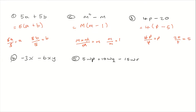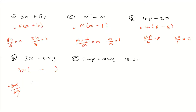Now for example 4, we have negative 3x minus 6xy. When we look at the numbers, what is the common factor between 3 and 6? The highest common factor — that would be 3. Then we'll look at the letters. We have x in the first term and x in the second term, so x is common to both terms. So the highest common factor for these two terms would be 3x, because we only have one y. So we need to open a bracket. We're going to take our common factor to divide each term. So negative 3x divided by positive 3x — 3x into 3x will give us 1, and 3x into negative 3x will give us negative 1. So inside of the bracket, we're going to put negative 1.